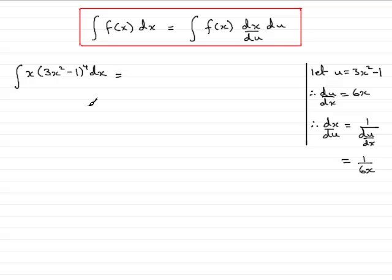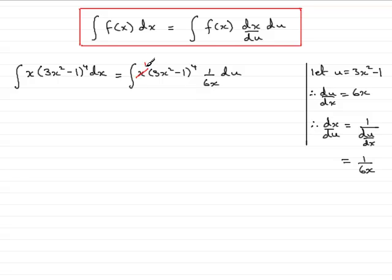In other words, this integral becomes the integral of x times bracket 3x squared minus 1 to the power 4. And in place of dx, we can write dx/du times du. So dx/du was 1 over 6x, and then we have the du on the end. What we notice here is that this x cancels out with this x, and that just leaves us with 1 sixth, which I can draw out the front of the integral. So 1 sixth, the integral of u to the power 4 du.